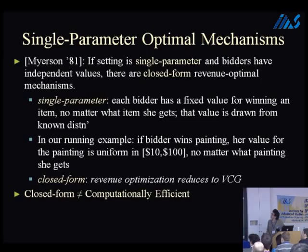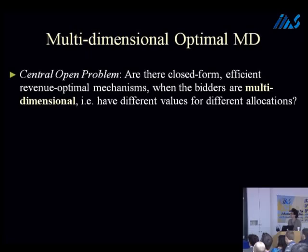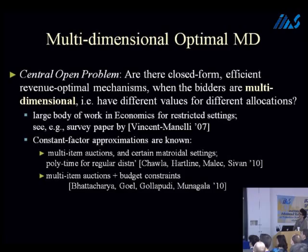A central open problem after Myerson is: is there a similar picture for multidimensional settings where the values of these edges are different? There is a large body of work after Myerson, and recently in computer science we've been able to get constant factor approximations to this problem — results by Chawla, Hartline, and others. Our results with Yang Kai and Weinberg are closed form, efficiently computable, nearly optimal revenue mechanisms.